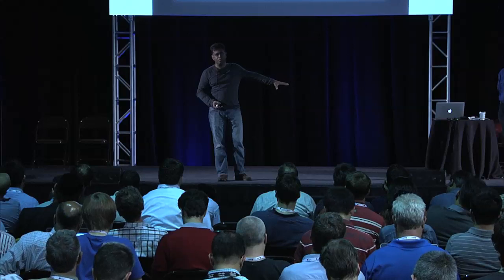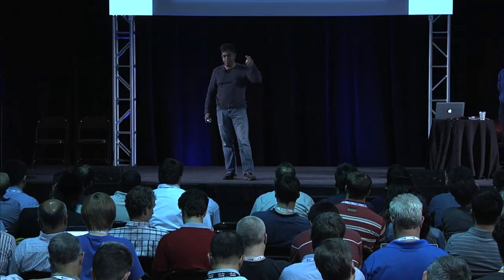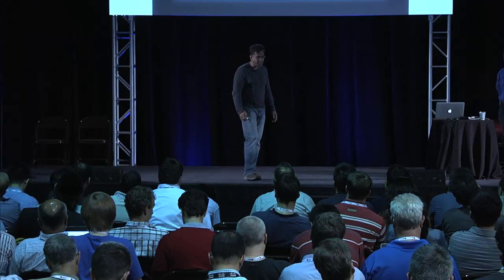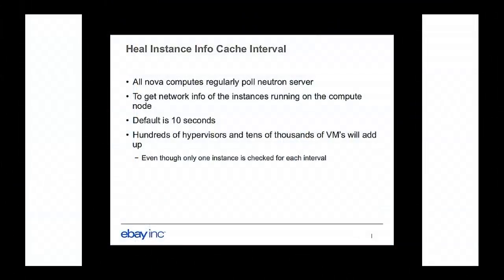Another issue — I wouldn't necessarily call it a problem — is the healing instance cache interval. All Nova computes have a periodic task that runs, default every 10 seconds, which makes a list of all instances running on the Nova compute and checks the Neutron server for port information. We decided to increase that periodic interval from 10 seconds to 10 minutes, which also reduced a little bit of load on the Neutron server.